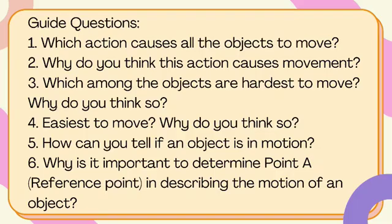Answer the guide questions. Number 1: Which action causes all the objects to move? Number 2: Why do you think this action causes movement? Number 3: Which among the objects are hardest to move? Why do you think so? Which among the objects are easiest to move? Why do you think so? Number 5: How can you tell if an object is in motion? Number 6: Why is it important to determine point A or the reference point in describing the motion of an object?